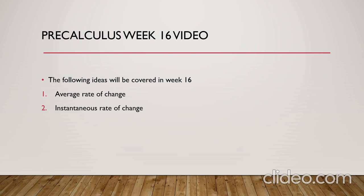The average rate of change finds how fast a function is changing with respect to something else changing. It is simply the process of calculating the rate at which the output, which is the y values, changed compared to its input, which is the x values. Whenever we want to describe how quantities change over time, it is the basic idea for finding the average rate of change, and it's one of the cornerstone concepts in calculus.